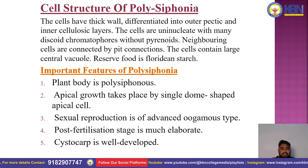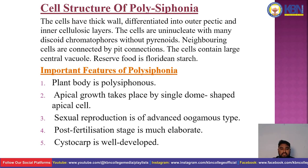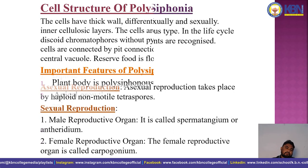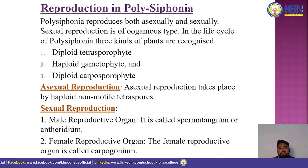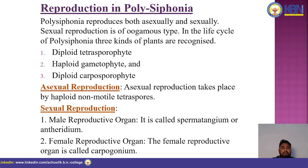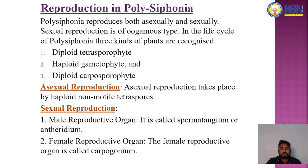Important features of Polysiphonia: the plant body is polysiphonous; apical growth takes place by a single dome-shaped apical cell; sexual reproduction is of an advanced oogamous type; the post-fertilization stage is elaborate; the cystocarp is well-developed. Reproduction in Polysiphonia occurs both asexually and sexually. In the life cycle, three kinds of plants are recognized: diploid tetrasporophyte, haploid gametophyte, and diploid carposporophyte. Asexual reproduction takes place by haploid non-motile tetraspores. The male reproductive organ is called spermatangium or antheridium; the female is called carpogonium.